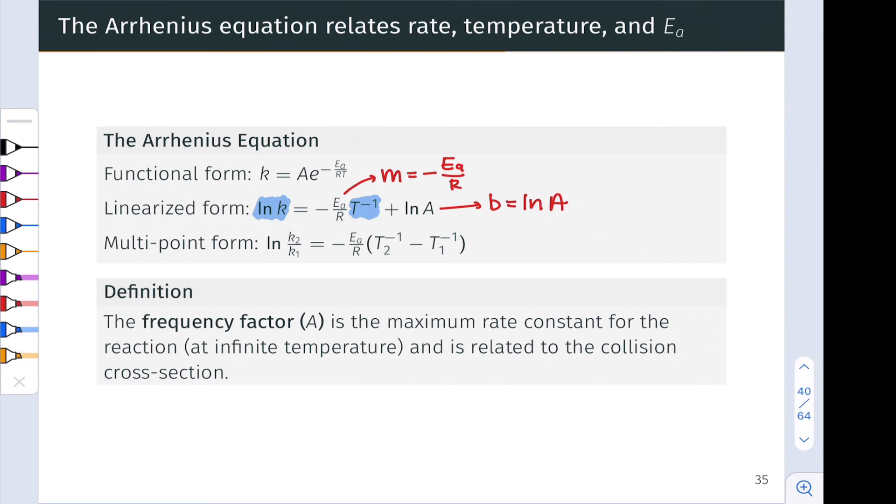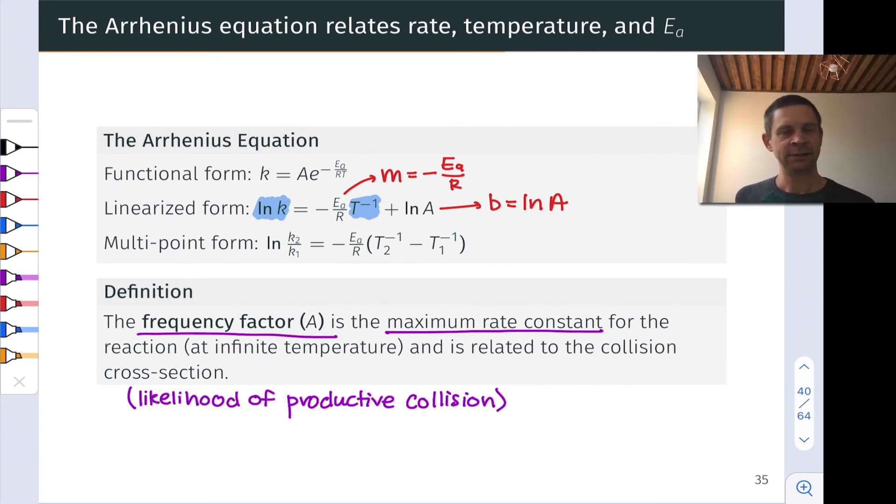To understand what A is, the first thing I encourage you to notice is that if E to the negative E sub A divided by R T, if that exponential factor were equal to one, the rate constant would be equal to A. This means that this value A, the frequency factor, is the maximum possible rate constant, the rate constant at infinite temperature. Since letting T go to infinity would make that exponential term go to zero and E to the zero power is one. Intuitively, this is the likelihood of productive collision. How important is the orientation factor? The more orientations that lead to reaction, generally speaking, the greater the frequency factor is. And it's related to a quantity known as the collision cross-section. You can think about it like the cross-section of the molecule upon which collision would lead to productive reaction. The bigger that is, the bigger the value of A. And because this is a rate constant at infinite temperature, these values tend to be very, very large for reactions.